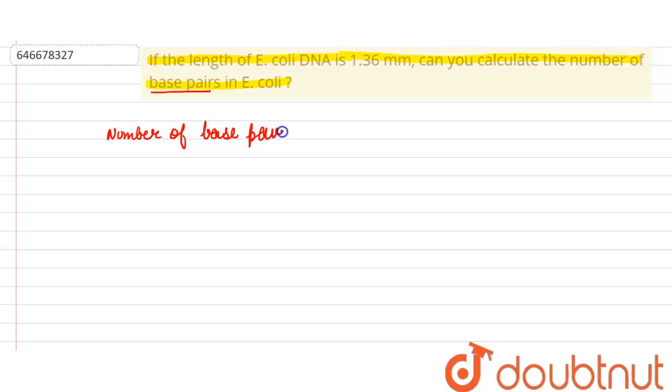Number of base pairs is equivalent to total DNA length divided by distance between two base pairs.